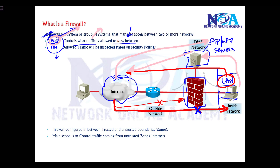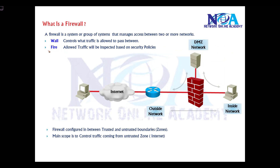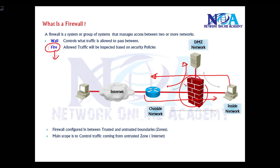The firewall controls what traffic is allowed and what is not. All traffic moving between the LAN and the internet is inspected based on security policies that we configure. Based on these security policies, traffic is either allowed or denied.